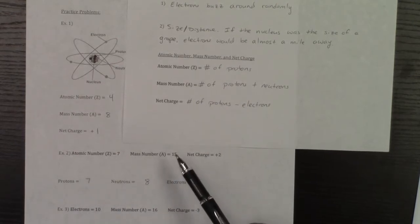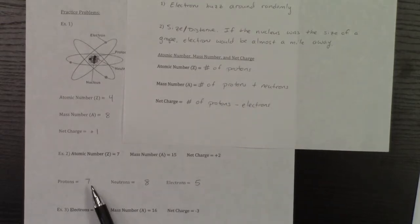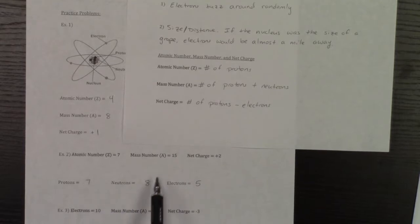The mass number is 15, and the mass number is the sum of protons plus neutrons. So I already know that I have seven protons, and so here, seven plus what is 15? Well, seven plus eight has to be 15.